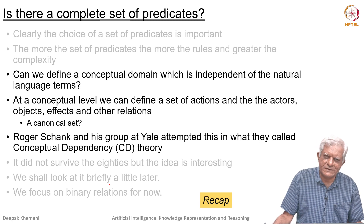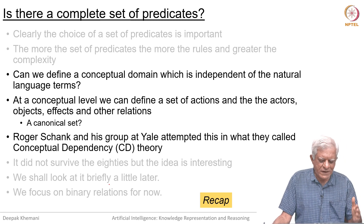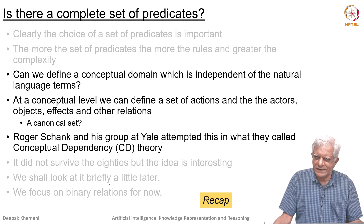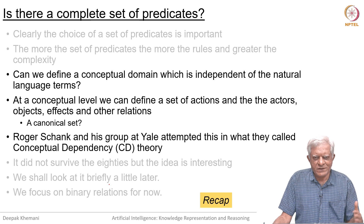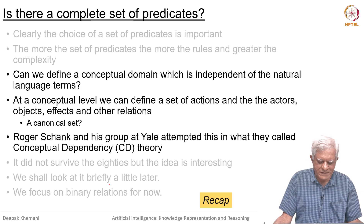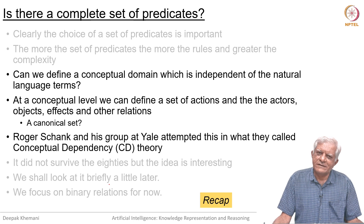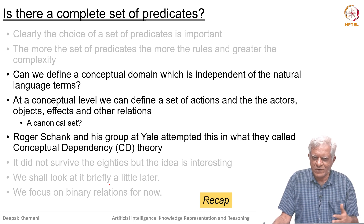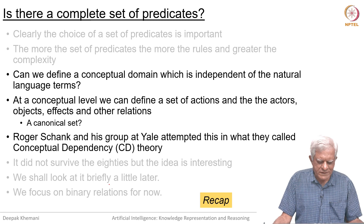So, can we think of such a set? Roger Schank and his group in the mid-70s at Yale University did a lot of work in this area and they developed what is called Conceptual Dependency Theory, which had a very small set of predicates. Now we will take a quick look at that.